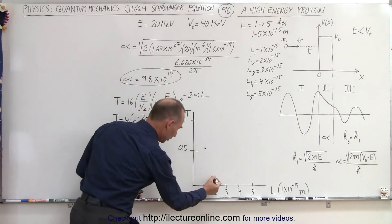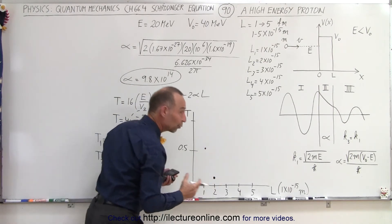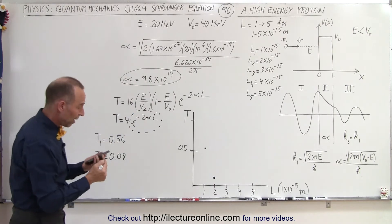All right, so now we've dropped all the way down to about here. So you can see that as the barrier gets wider, the probability drops drastically.